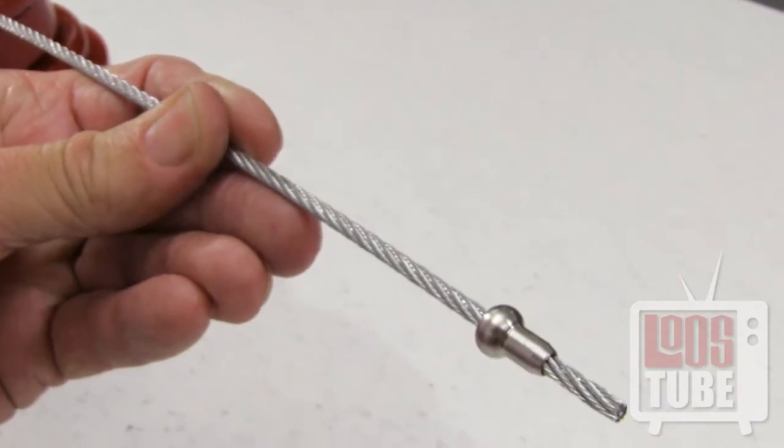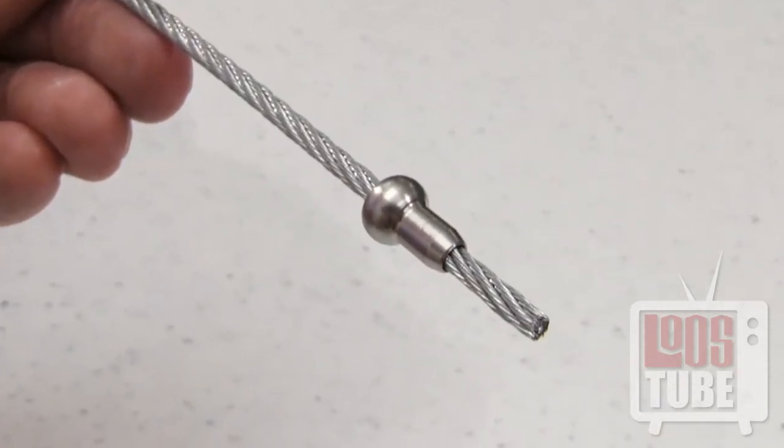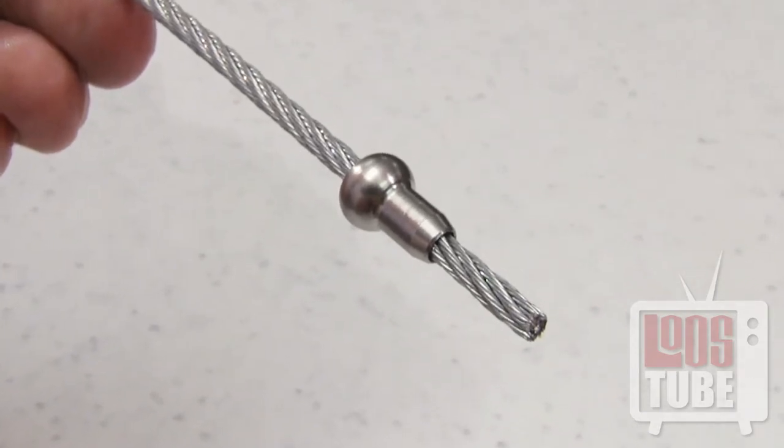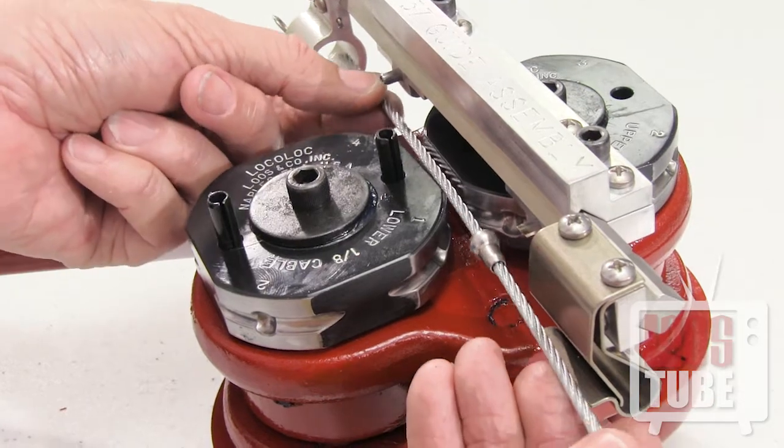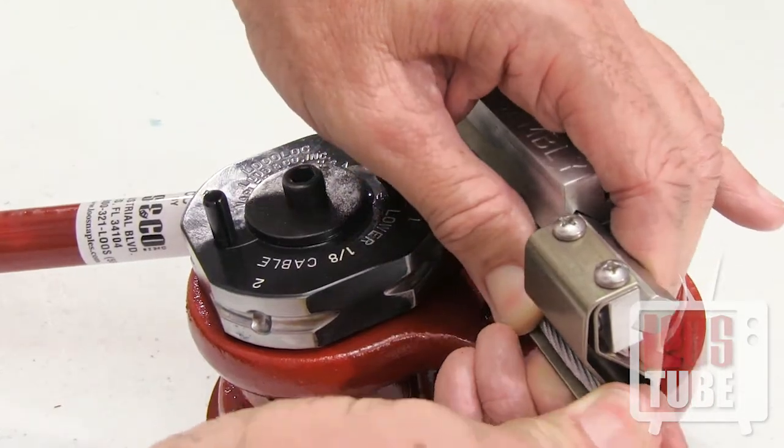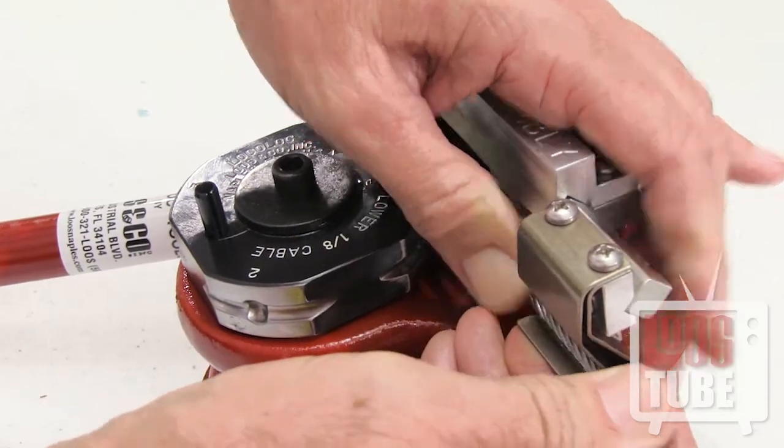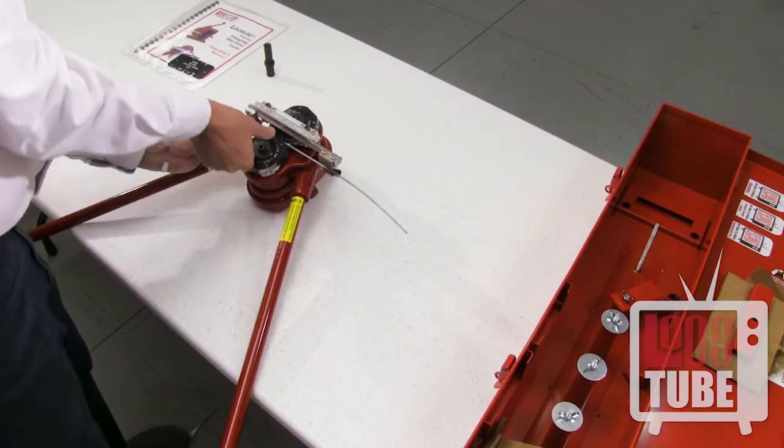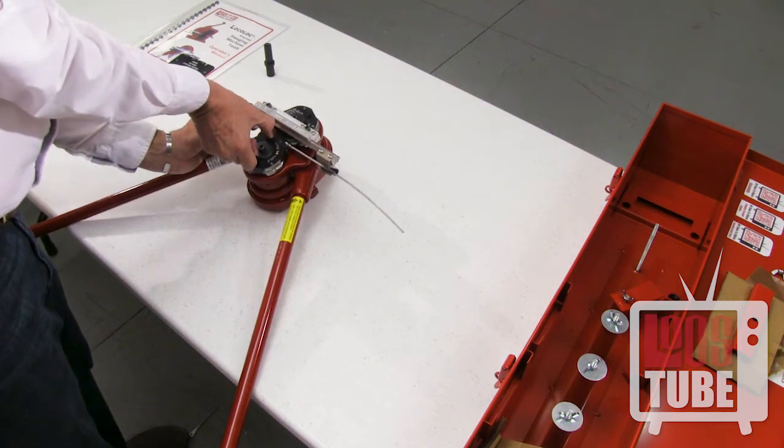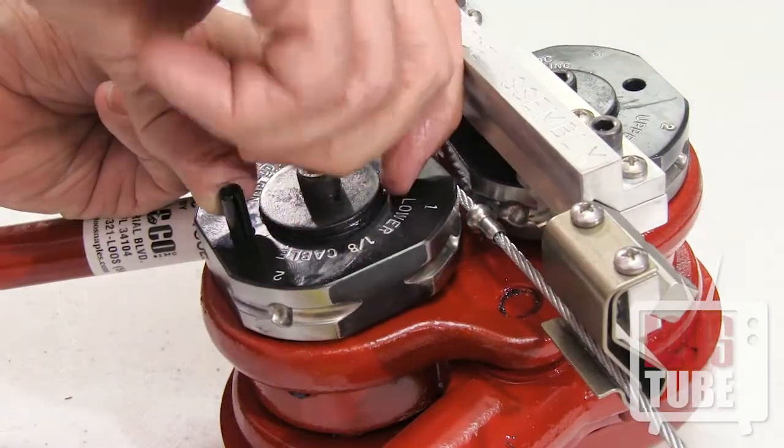If swaging single shank balls, keep in mind that the shank will face to the right when swaging, so ensure that you have oriented it properly. Insert the end of the fitting into the feed guide adapter and snap the cable into place. Grasp the pins on the lower die and turn counterclockwise to align the arcs labeled 1 on both the upper and lower dies. This is where you will begin to swage the ball.